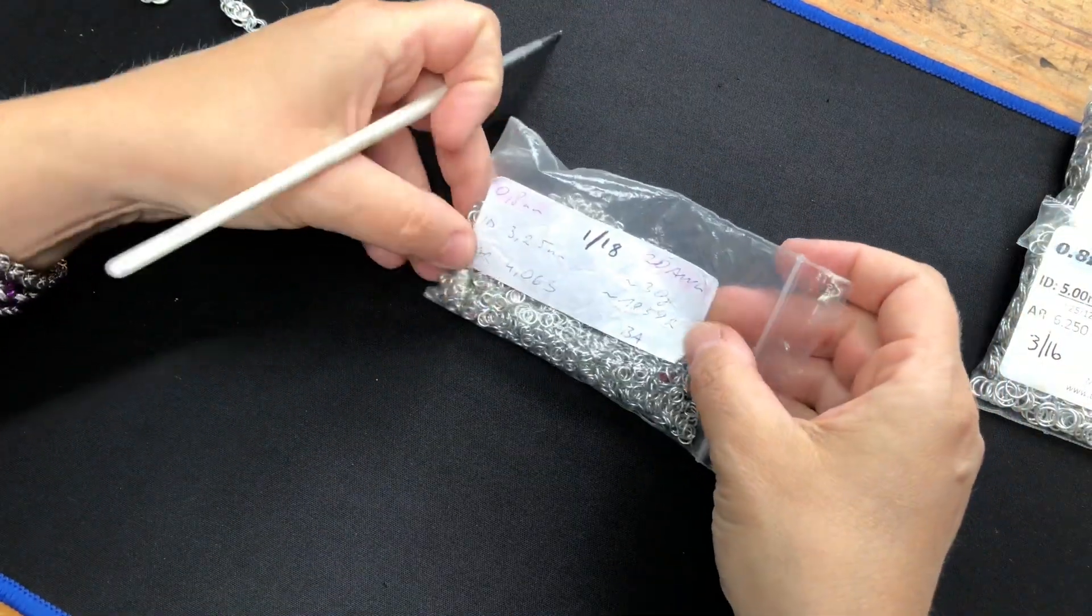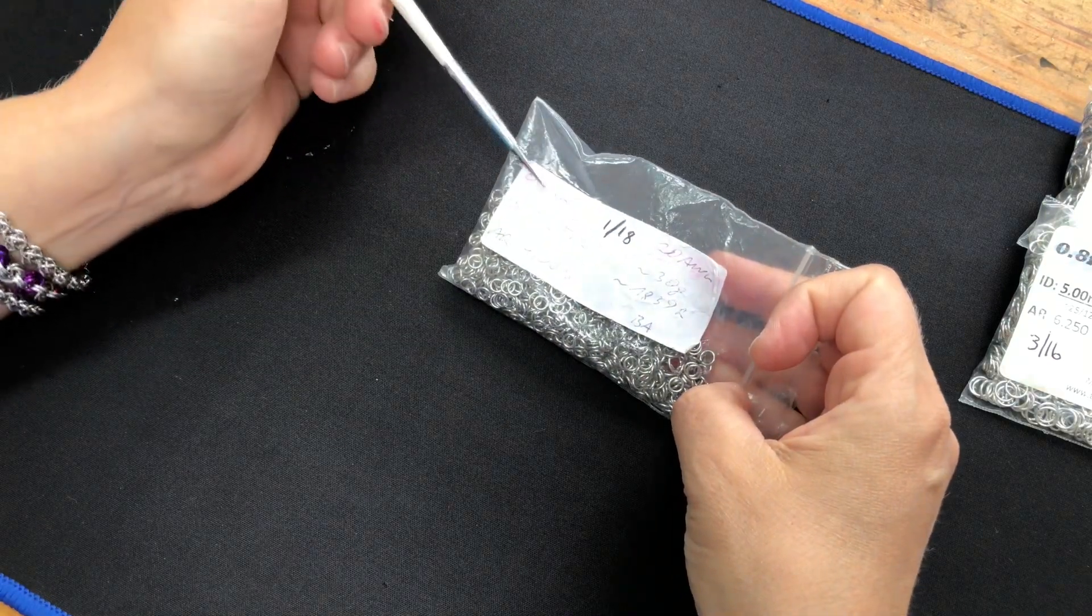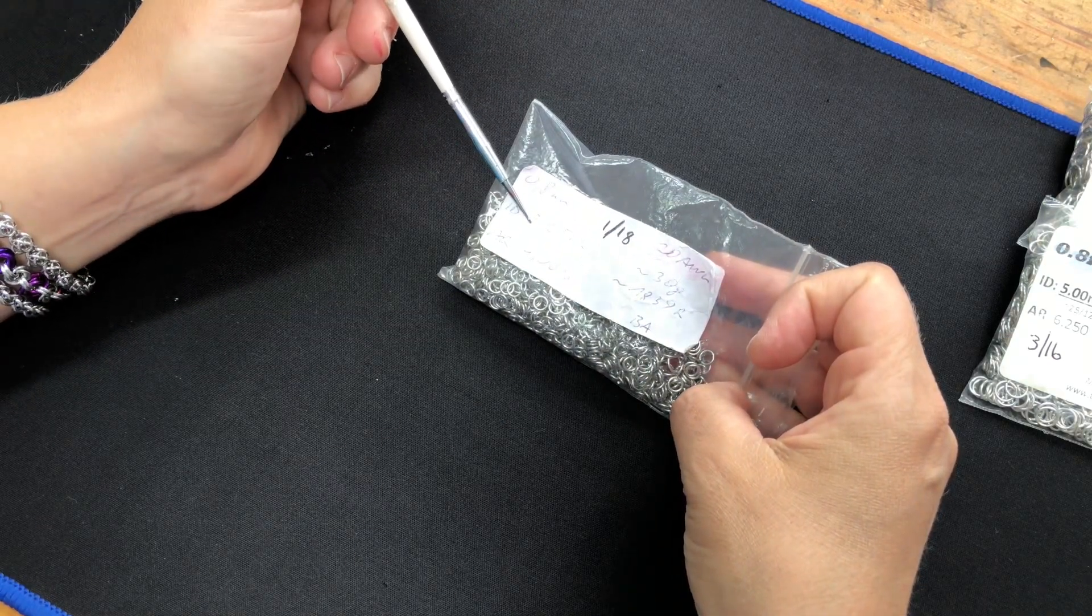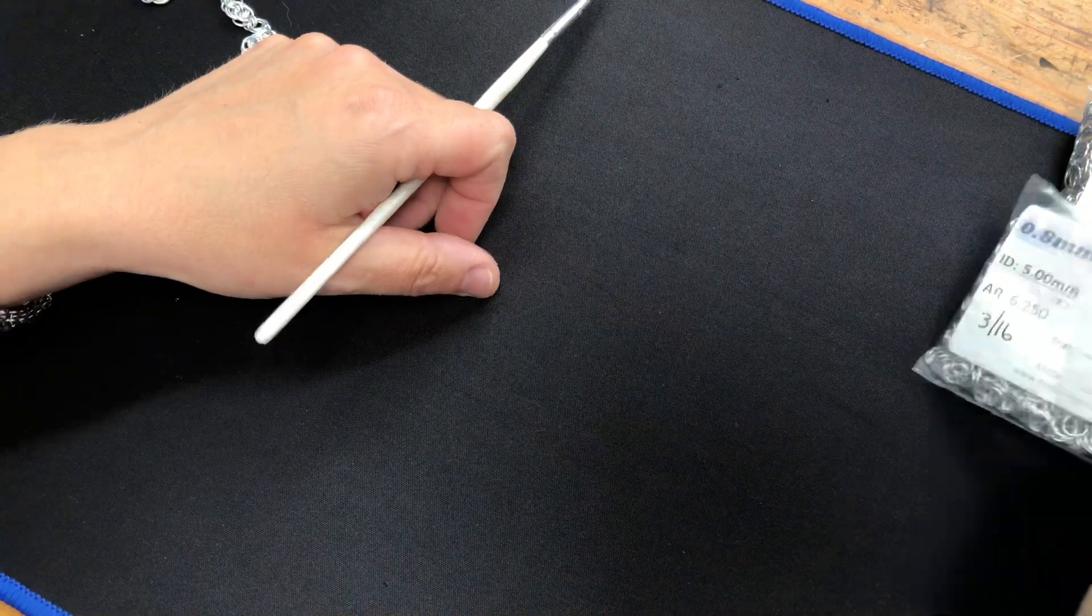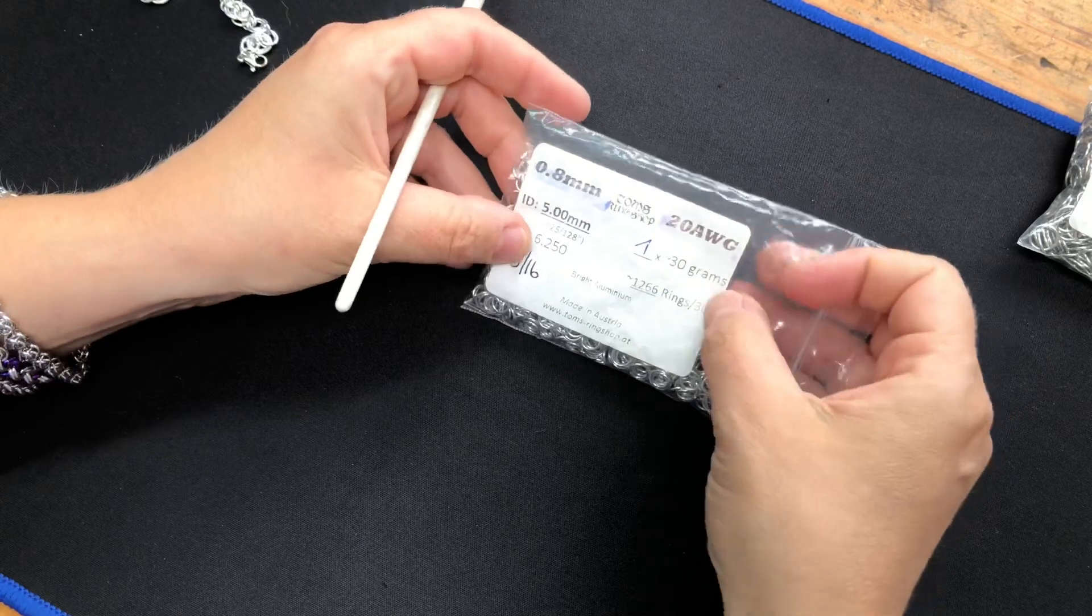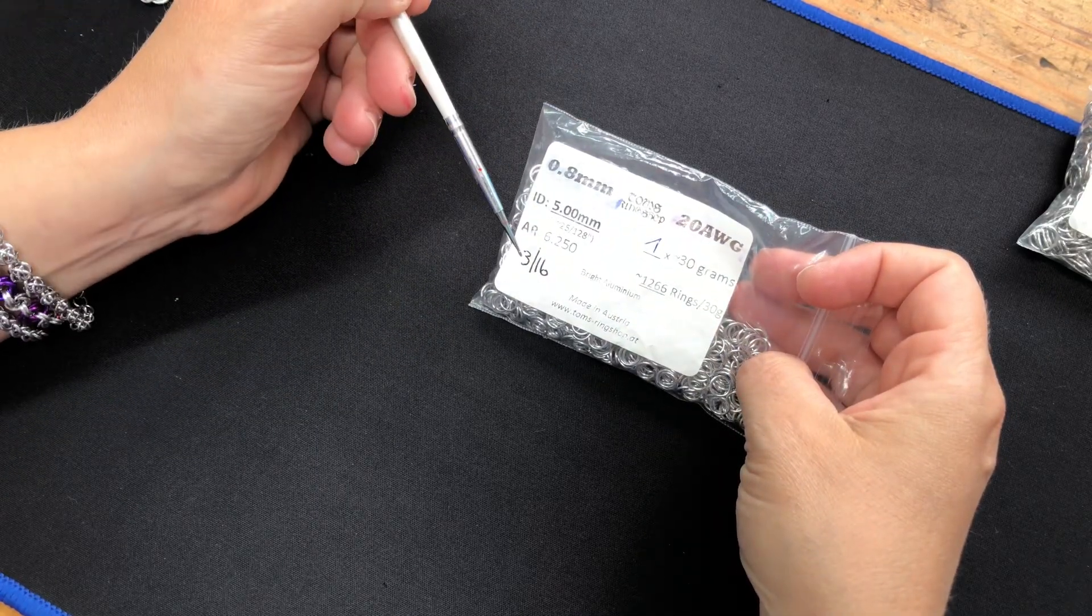So what I'm using: 20 AWG for the smallest ring, 1/8th in British, 3.25 millimeters. I say British, other people use millimeters too. Then we've got, again, 20 AWG, 5 millimeters, which is 3/16th imperial.